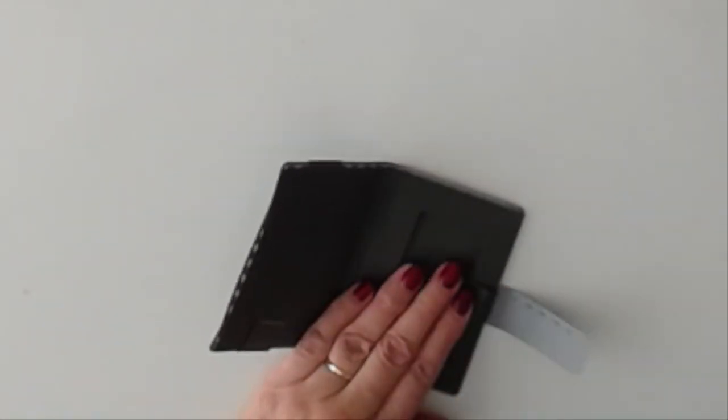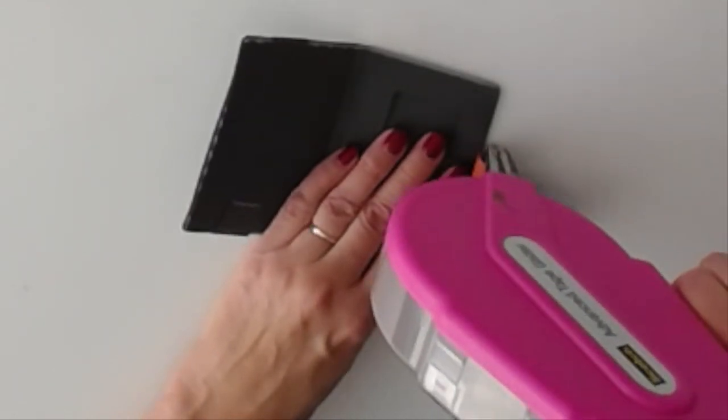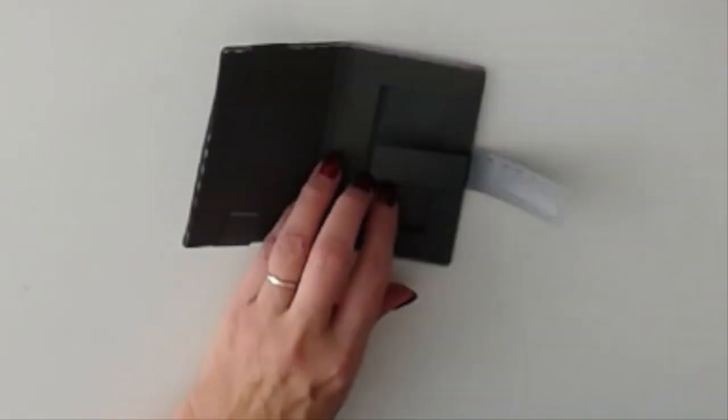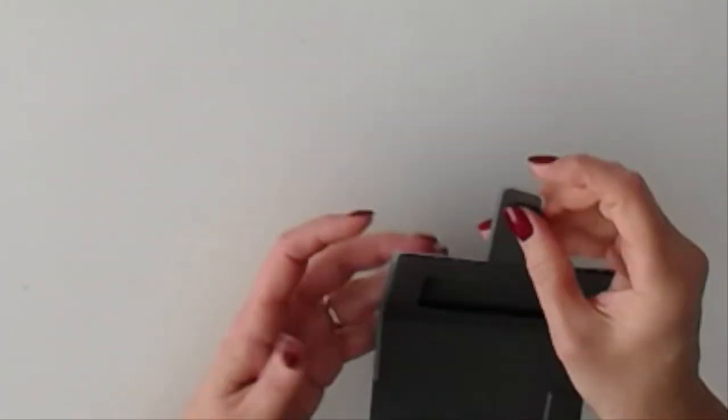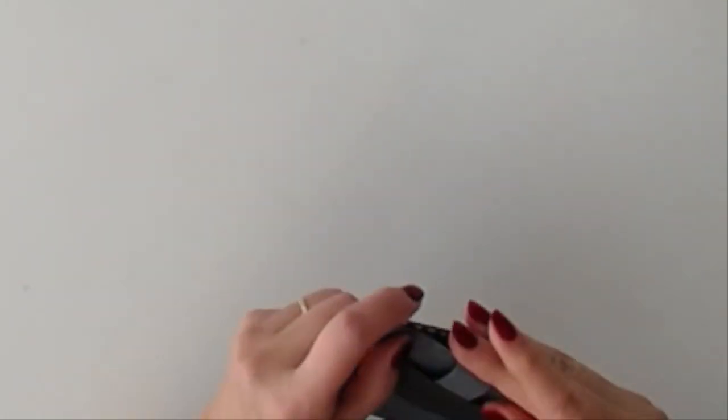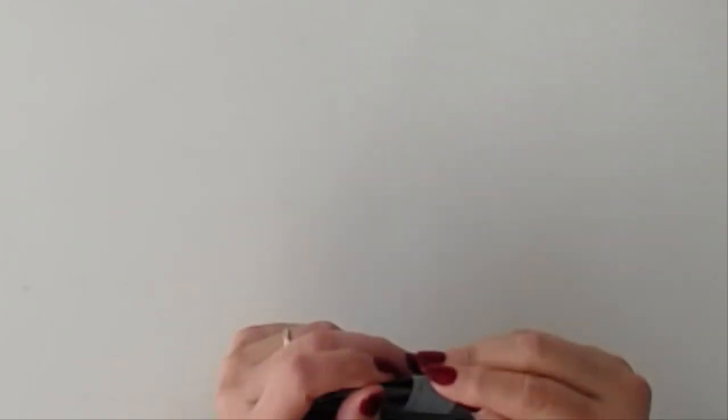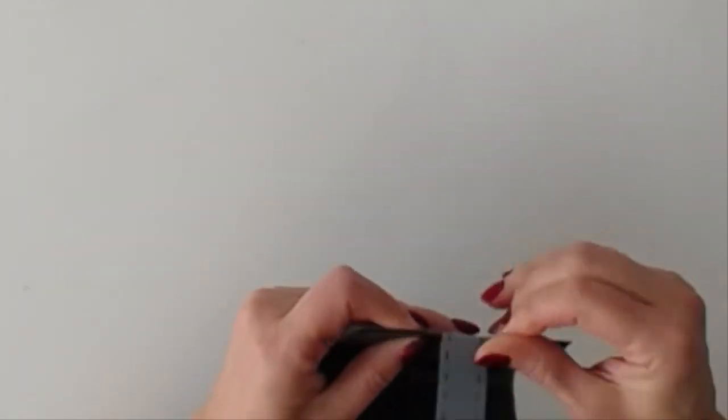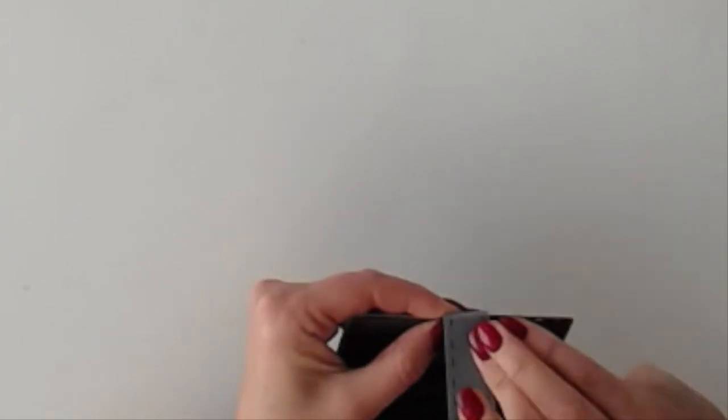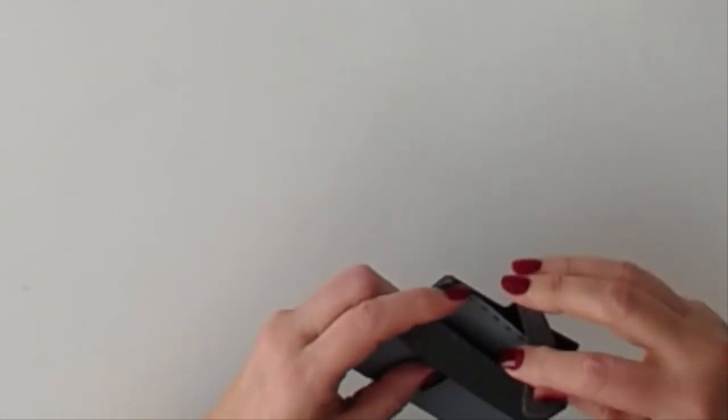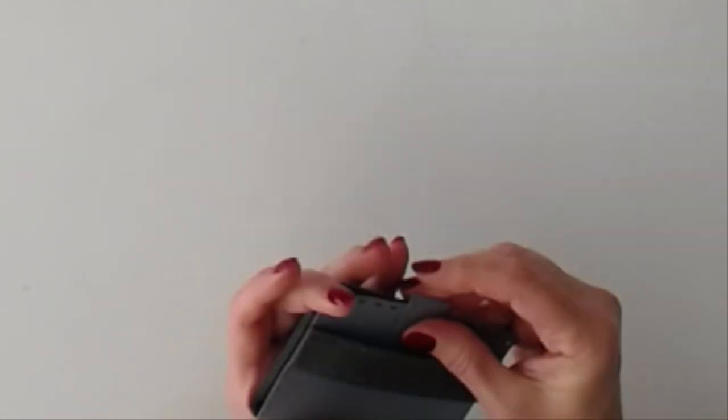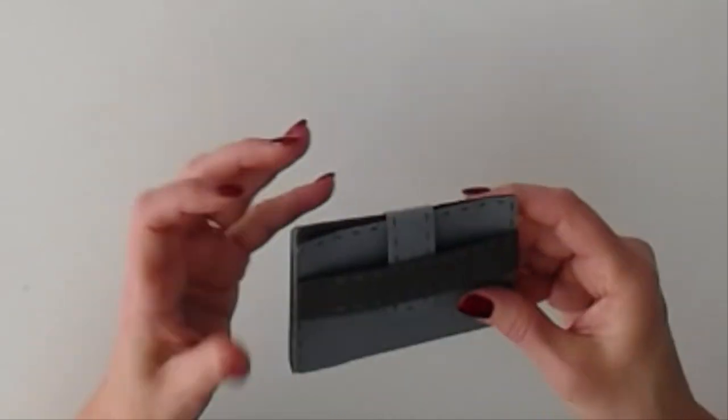Okay. We're going to run adhesive on the inside layer. I need to fold my score lines again. Once you attach the inside layer you need to double up on folding your score lines. There we go.